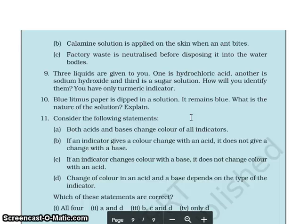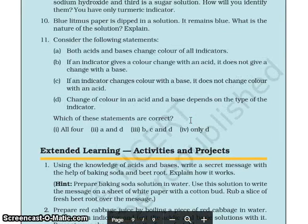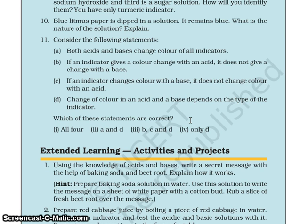Question 9: three liquids are given to you — one is hydrochloric acid, another is sodium hydroxide (base), and the third is sugar solution. How will you identify them? You have only a turmeric indicator. Question 10: blue litmus paper is dipped in a solution — if it remains blue, what is the nature of the solution? Explain. Question 11: consider the following statement — both acid and bases change the color of all indicators. Which of these statements are correct?